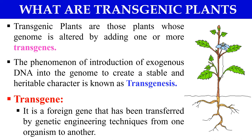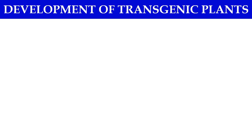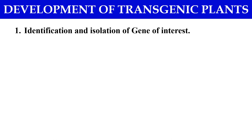Keep in mind: the gene which we are transferring to the plant should create a stable and heritable character, then only we can develop transgenic plants. Now, how can we develop a transgenic plant? For development of transgenic plants there are a few steps, like first is identification and isolation of the gene of interest — the gene which we want to transfer to the plants.